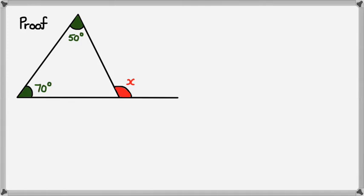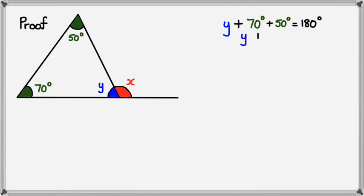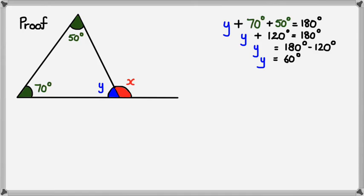Normally what you'd do is figure out this little angle first — let's call it Y. We know that angles in a triangle equal 180 degrees, so Y plus 70 plus 50 equals 180 degrees. That gives us Y plus 120 equals 180, so rearranging, Y equals 180 minus 120, which means Y equals 60 degrees. The reason: the sum of angles in a triangle adds up to 180 degrees.